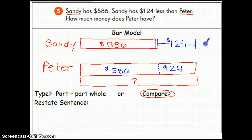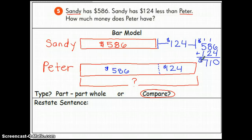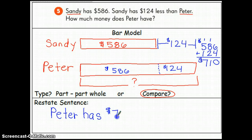So, I'm going to set up my number sentence, which is $586 plus $124. I'm going to add that up. Which is $710 for Peter's amount here. So, I'm going to take that answer and plug it into my restate sentence. I'm once again going to check my question up here, which is how much money does Peter have. I'm going to pull the important words and say, Peter has $710.